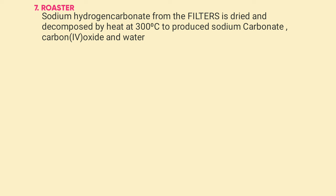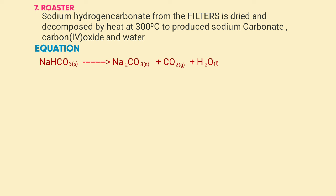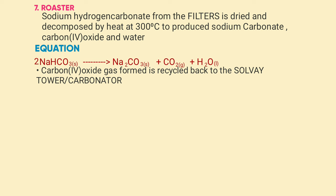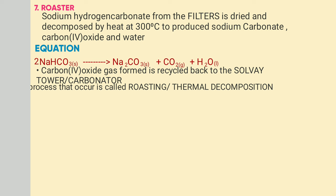The last part is the roaster. Sodium hydrogen carbonate that was filtered out from the filter as a residue is pumped into the roaster, where it is decomposed by heat at a temperature of 300 degrees Celsius to form sodium carbonate, carbon dioxide, and water. The carbon dioxide is recycled back to the carbonator at the Solvay tower. The process that occurs in the roaster is called thermal decomposition.